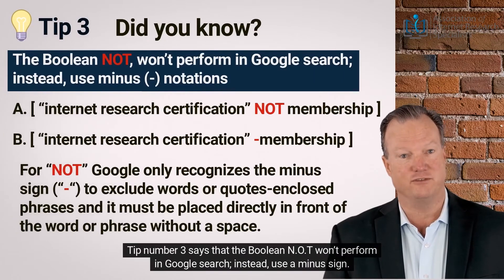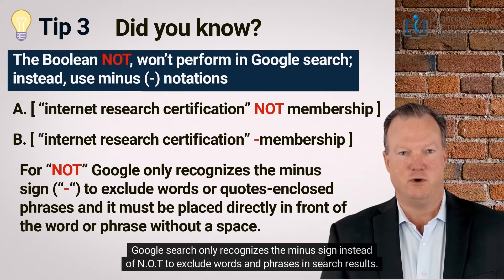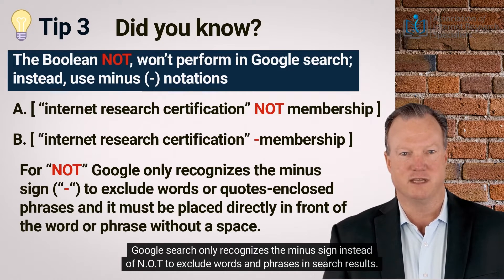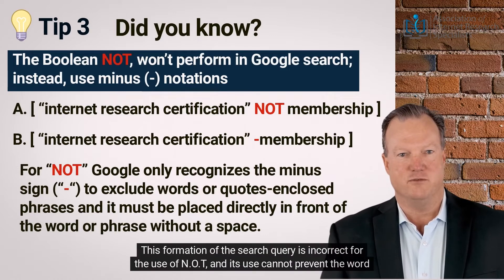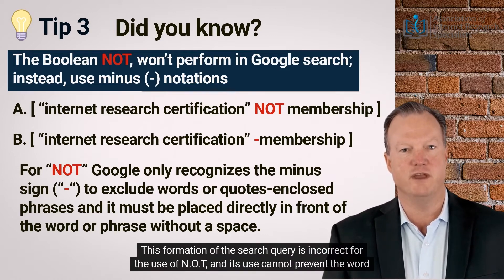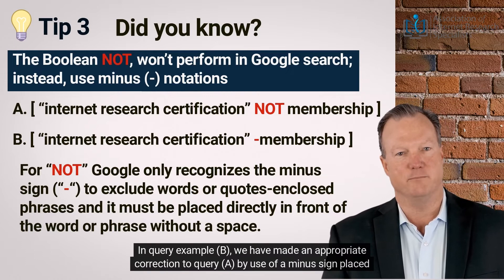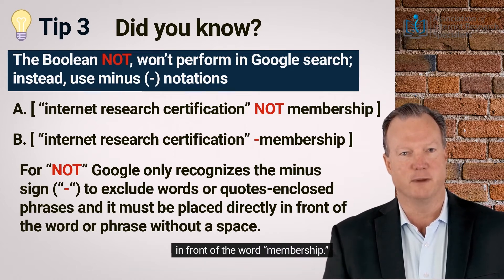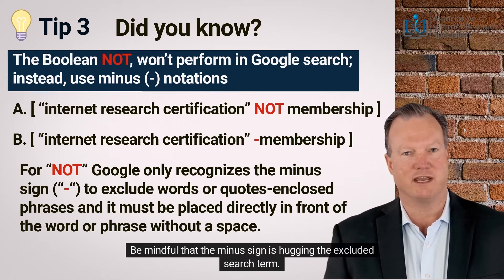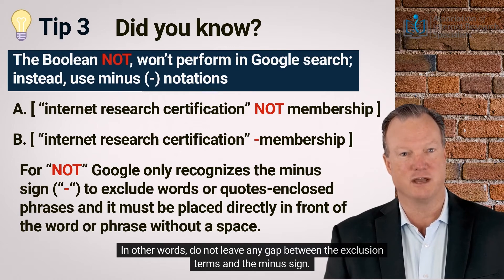Tip number 3 says that the boolean NOT won't perform in Google search. Instead, use a minus sign. The boolean NOT is treated as a text word, not an operator. Google search only recognizes the minus sign instead of NOT to exclude words and phrases in search results. Have a look at example A — this formation of the search query is incorrect for the use of NOT, and its use cannot prevent the word 'membership' from appearing in search results. In query example B, we have made an appropriate correction by using a minus sign placed in front of the word 'membership.' Be mindful that the minus sign is hugging the excluded search term — do not leave any gap between the exclusion term and the minus sign.